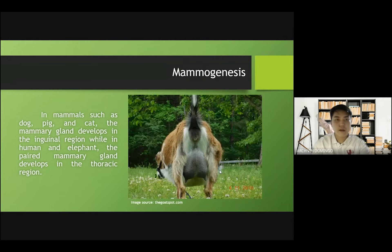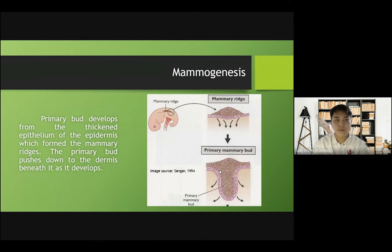In mammals such as dog, pig, and cat, the mammary gland develops in the inguinal region, while in humans, elephants, and monkeys, the paired mammary gland develops in the thoracic region. The primary bud develops from the thickened epithelium of the epidermis which formed the mammary ridges, and the primary bud pushes down to the dermis beneath as it develops.